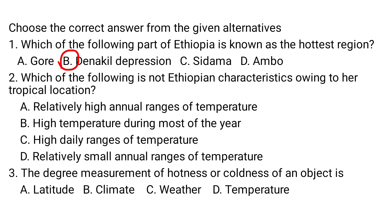From these four options, the one that does NOT characterize the Ethiopian climate condition is A — relatively high annual ranges of temperature — because Ethiopia actually has relatively small annual ranges of temperature. Question number three: the degree measurement of hotness or coldness of an object is A) latitude, B) climate, C) weather, D) temperature. Temperature is the measure of hotness or coldness of an object, so the answer is D.